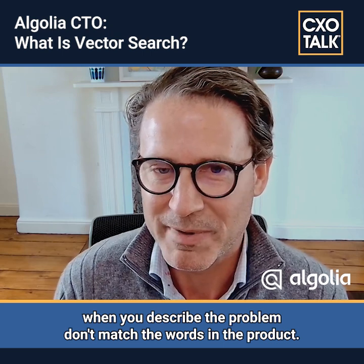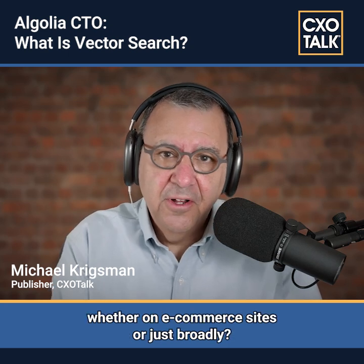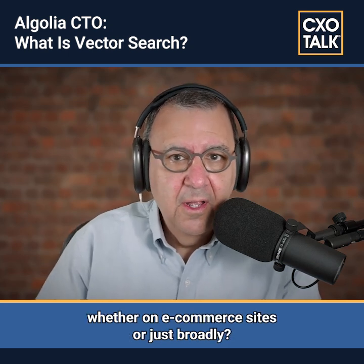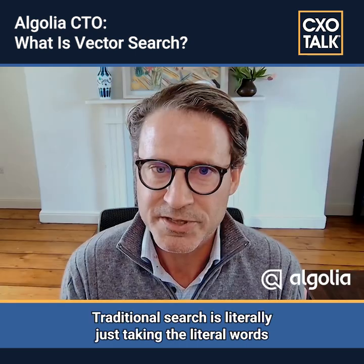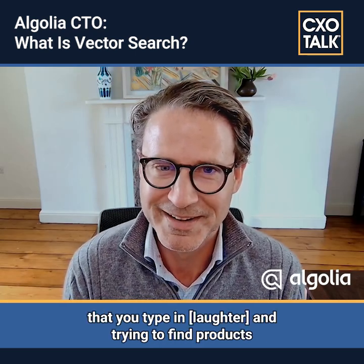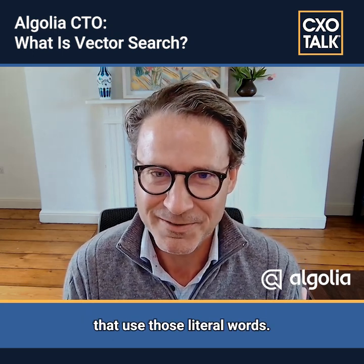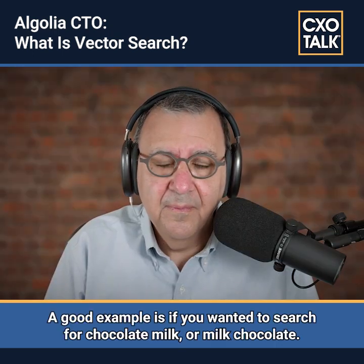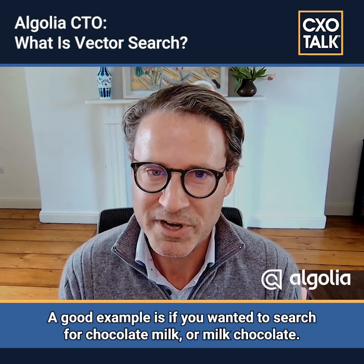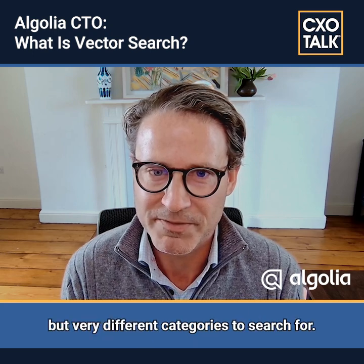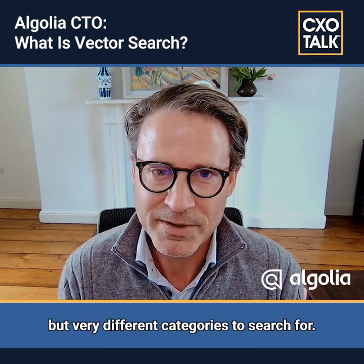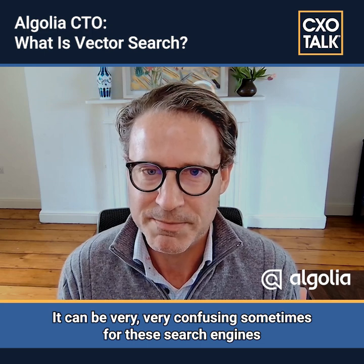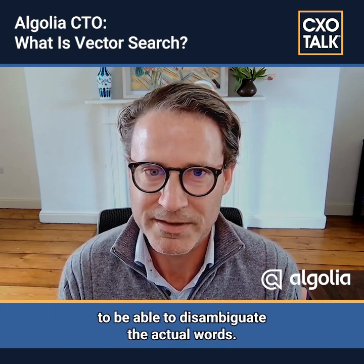We can actually find products specifically designed to solve those problems, even if the words you're using to describe the problem don't match the words in the product. How is this different from traditional search, whether on e-commerce sites or broadly? Traditional search literally just takes the literal words you type in and tries to find products that use those literal words. A good example is searching for 'chocolate milk' or 'milk chocolate' — these are two terms with exactly the same words but very different categories to search for.